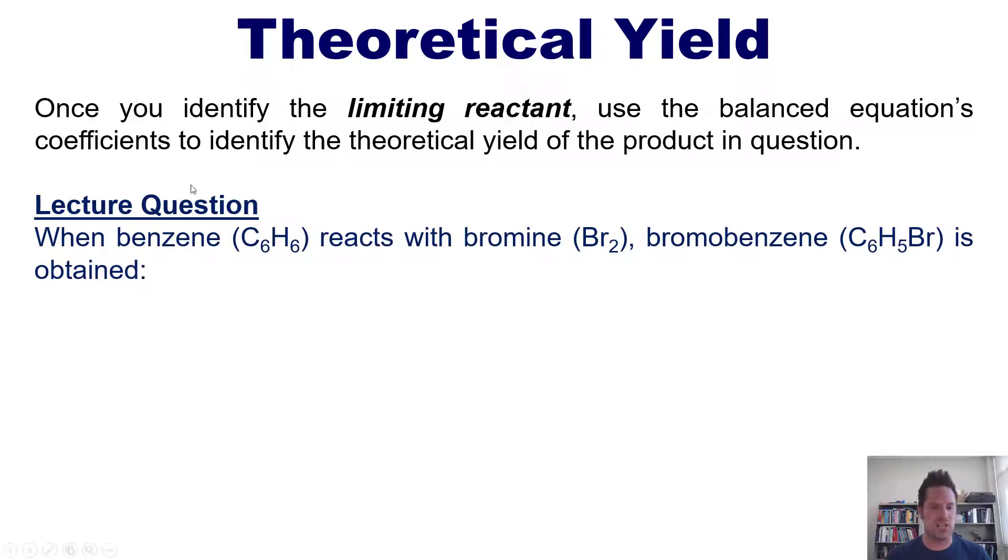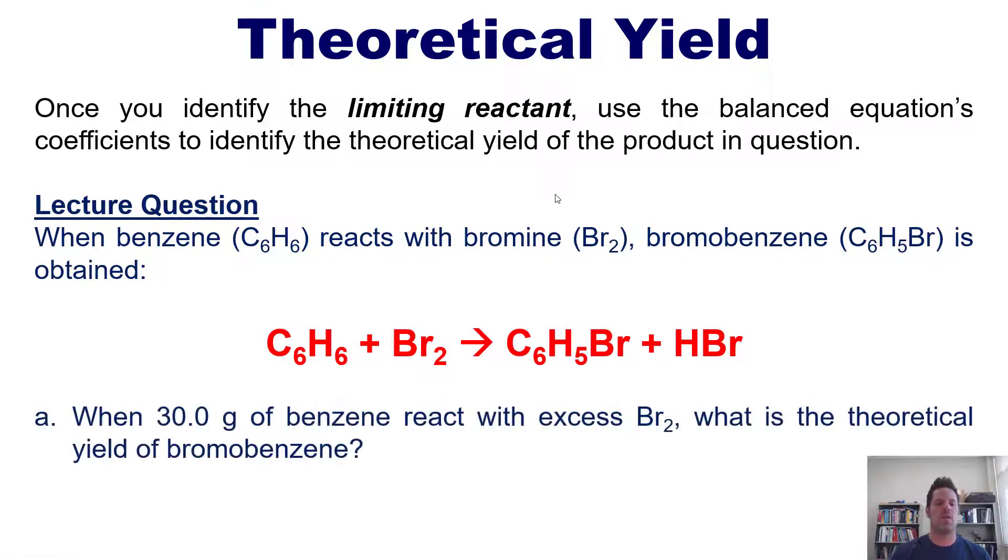When benzene, which has this formula, reacts with bromine, Br2, bromobenzene is obtained or formed according to this balanced equation. So here's our question: when 30 grams of benzene react with excess Br2, what is the theoretical yield of bromobenzene? And separately is a question you can work on your own: when 20 grams of Br2 react with excess benzene, what's the theoretical yield of HBr?